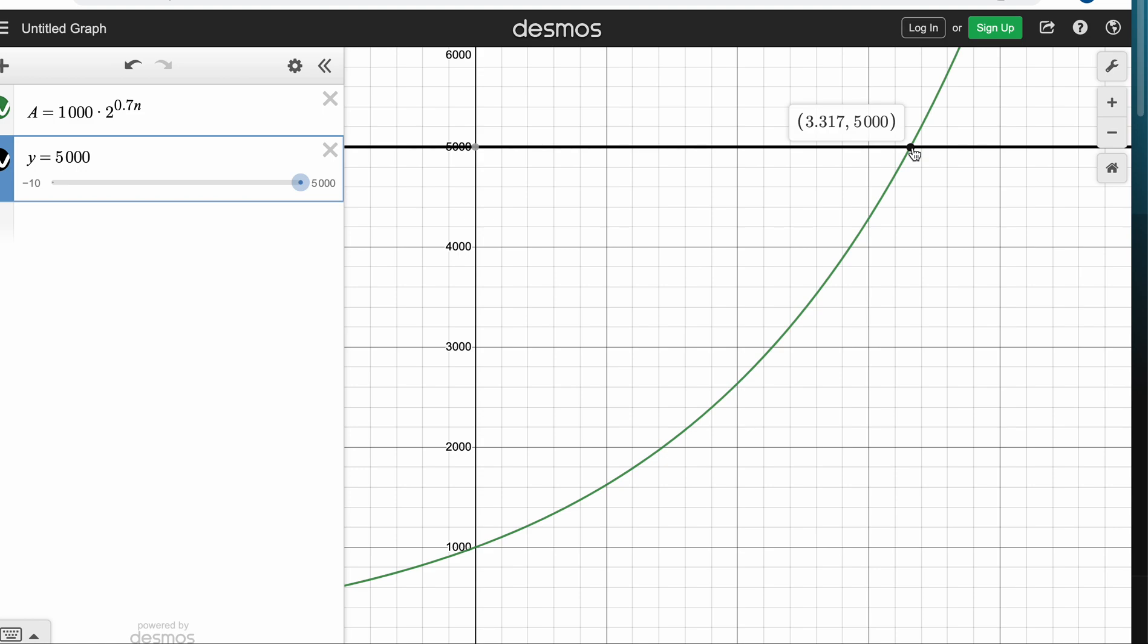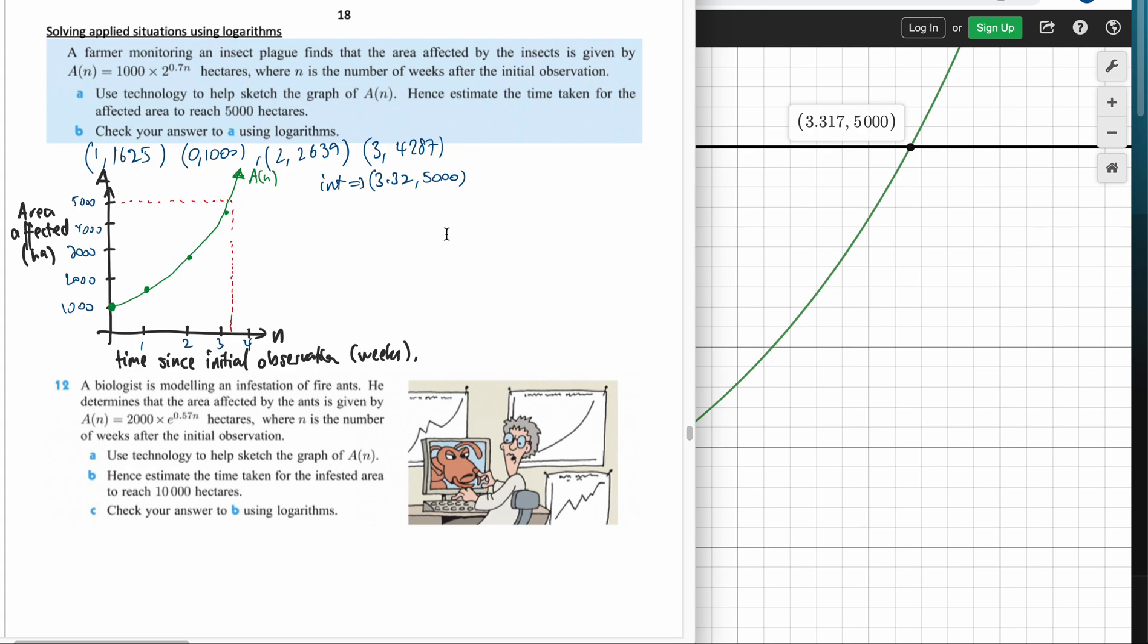Now we're going to check that answer using logarithms. First step: 5,000 = 1,000 × 2^(0.7n). We know straight up that we can divide both sides by a thousand to get rid of those coefficients from the last lesson. We're left with 5 = 2^(0.7n). Next step, logs help get the unknown index. We can now bring that 0.7n to the front and I'm going to divide both sides by log 2.